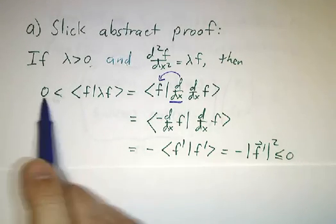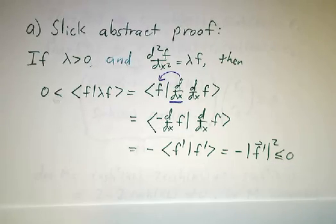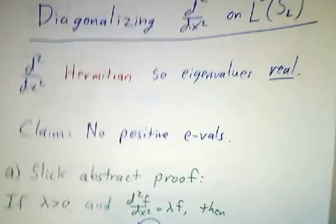Well, that's a contradiction. We had a positive number that's less than or equal to 0. No good. And so you can't have any positive eigenvalues.